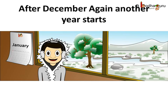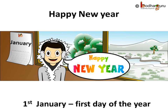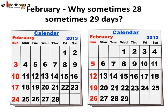And what is the new year day? The new year starts from January 1st. Now, all the months have a fixed number of days, either 30 or 31, but only the February month has either 28 or 29 days.